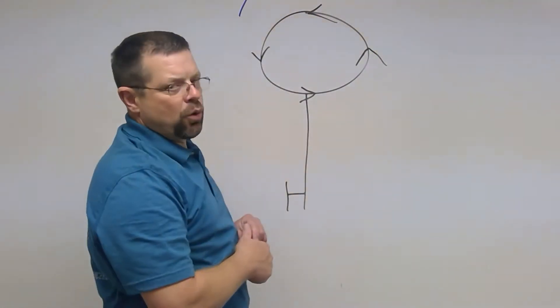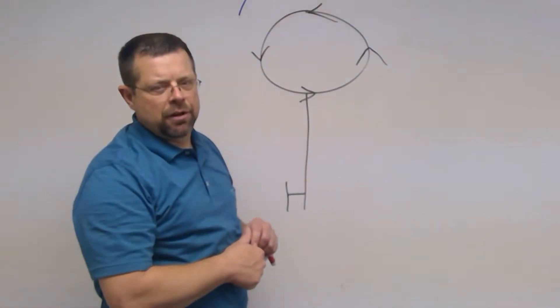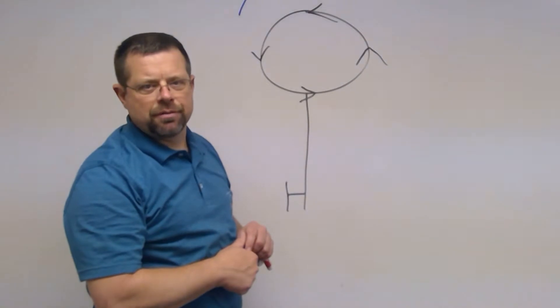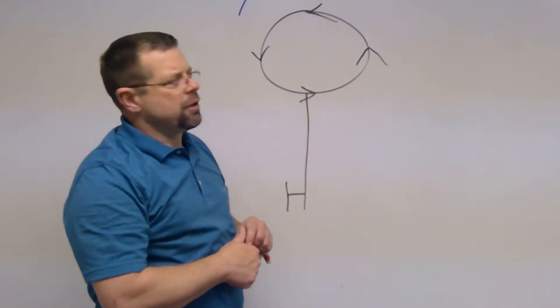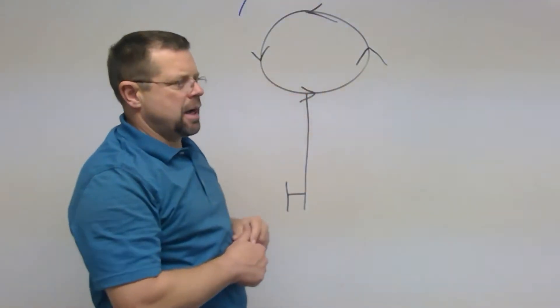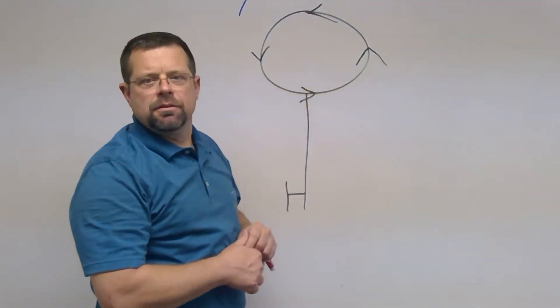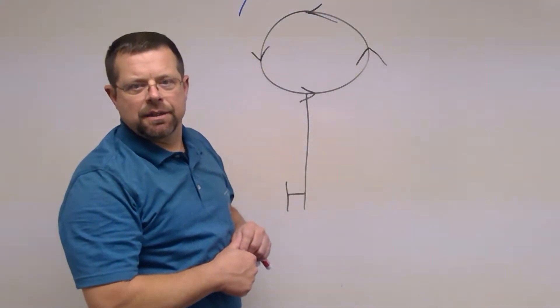If you're in forward flight, enter an autorotation. This will get rid of the torque and the aircraft will fly straight again.